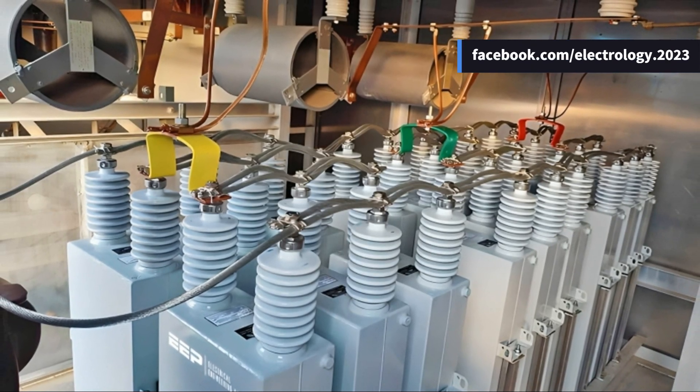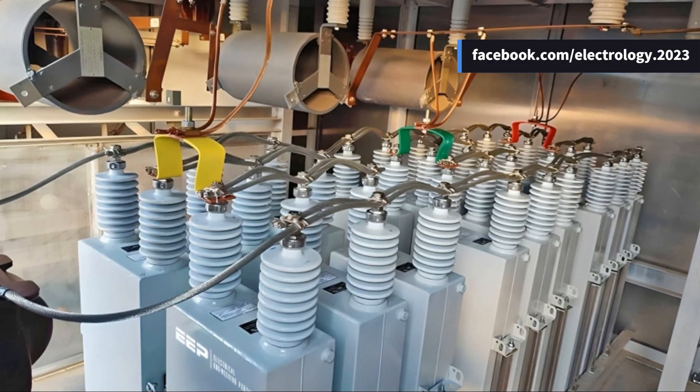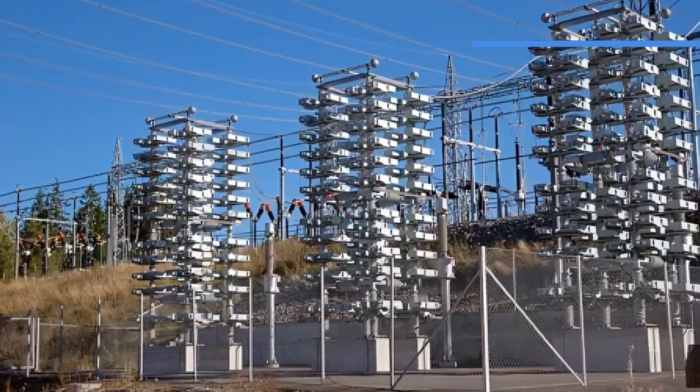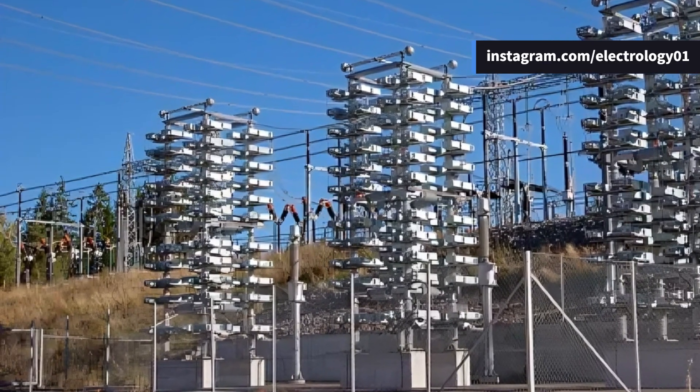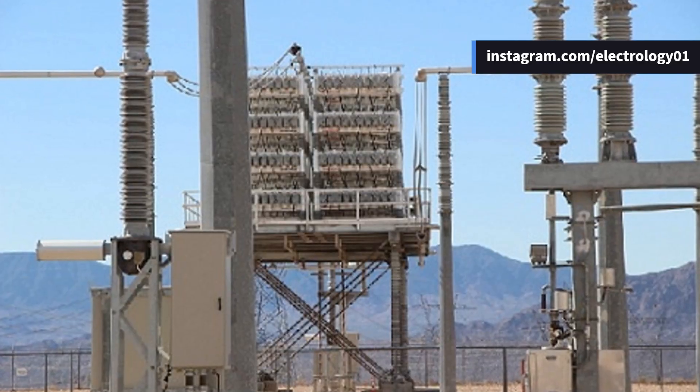Have you ever noticed why capacitor banks in power systems are almost always connected in delta and not in star? I mean, we use both delta and star configurations in electrical engineering, but when it comes to capacitor banks, especially for power factor correction in substations or industrial systems, delta is the go-to connection. Why is that? Let's break it down.